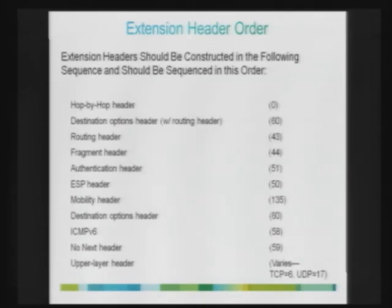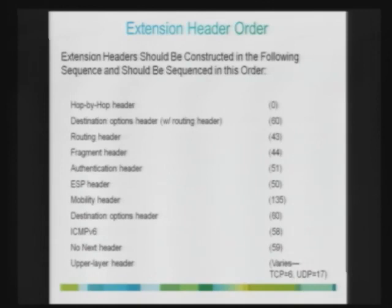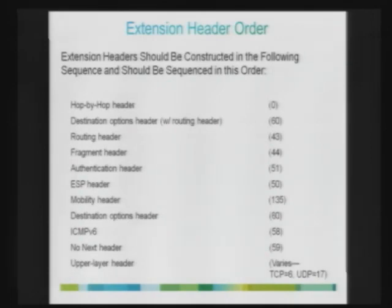Fragmentation is not supported by intermediate routers. However, if a source needs to send a packet larger than what is supported by the links along the path, it can use the fragment extension header — which won't be processed by intermediate routers. With IPv6, the basic protocol provides the option to support IPsec through two extension headers: the authentication header and the encapsulation security payload (ESP) header. For mobile IPv6 applications, there is a mobility header available.